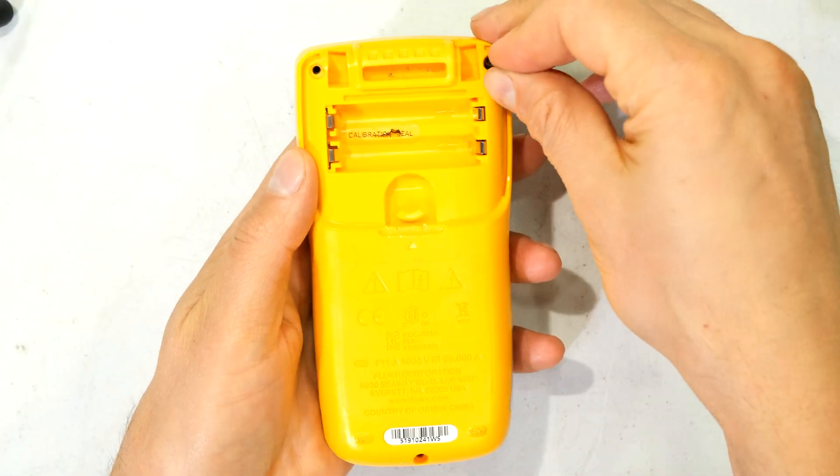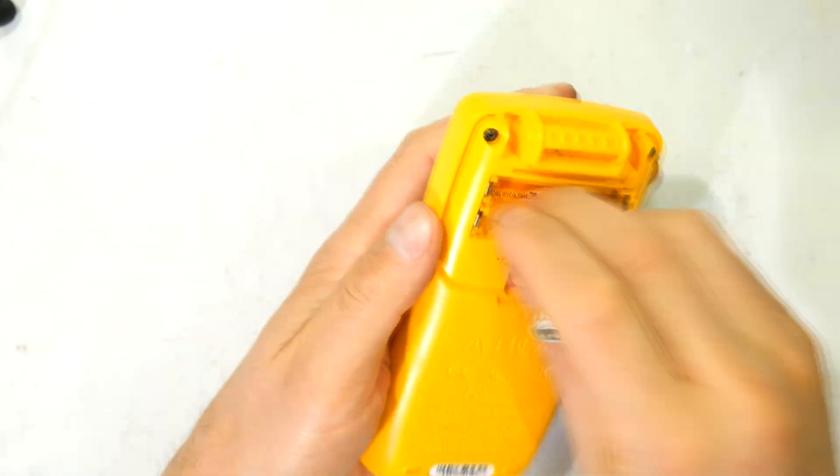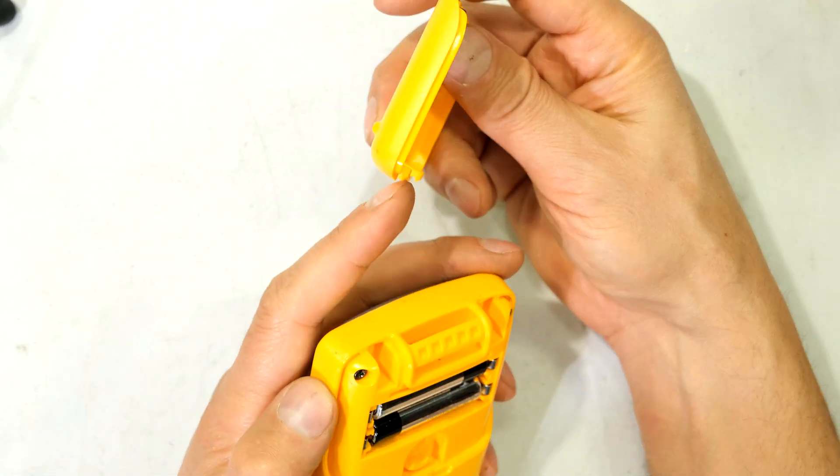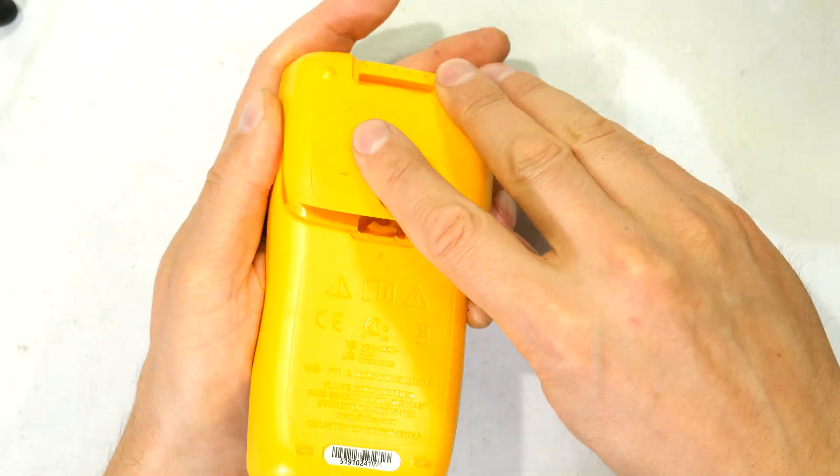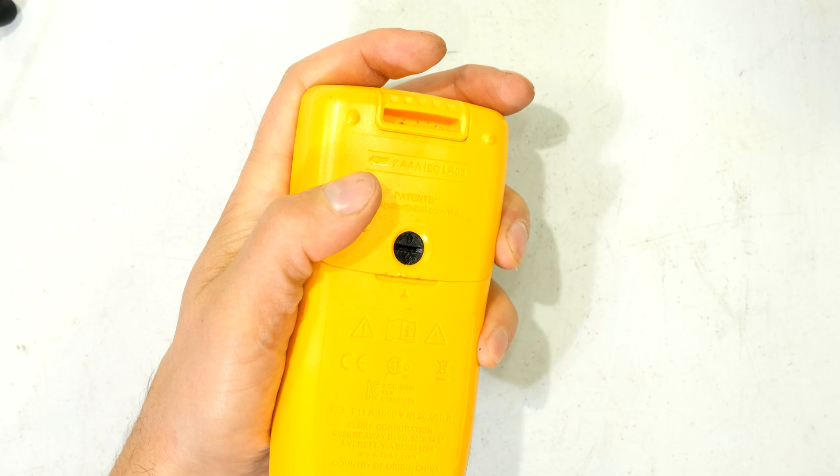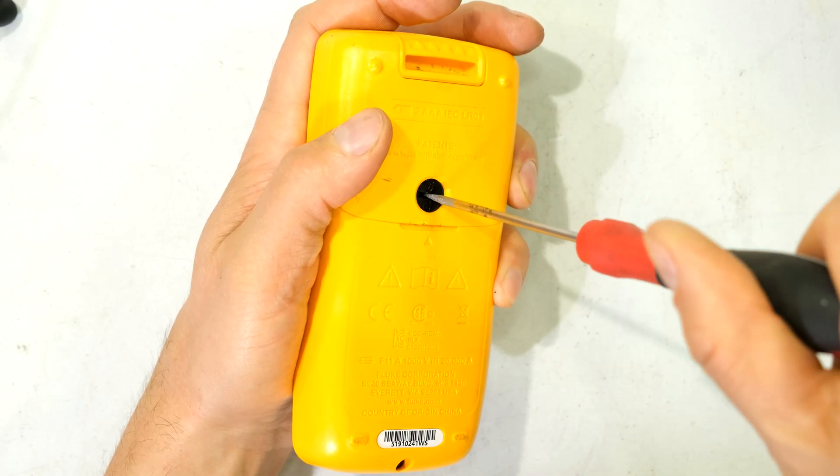I now return the three screws. Right, to return the back cover there are two posts over here which align to the back there and I rotate it inwards and then I just lock it in place.